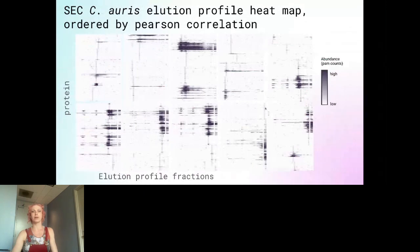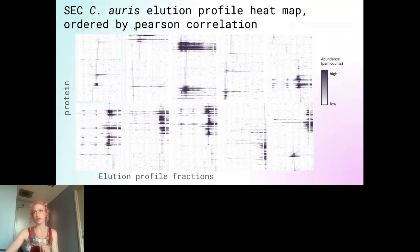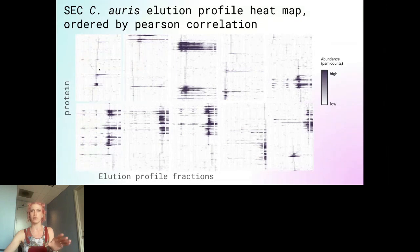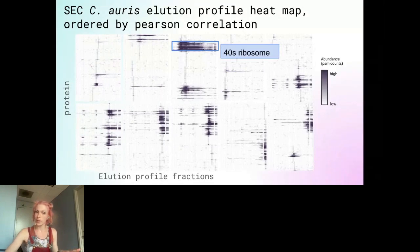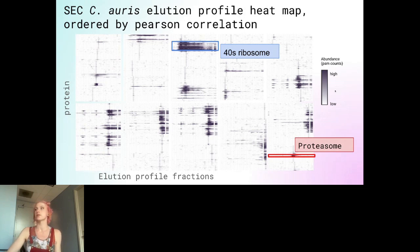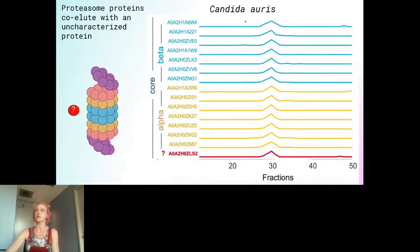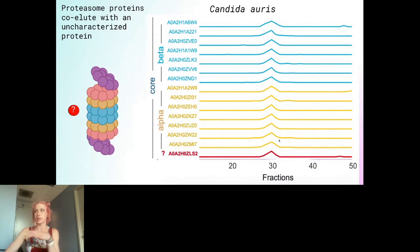At a more granular scale, here is a size exclusion chromatography Candida auris elution profile heat map ordered by Pearson correlation, meaning proteins with similar elution profiles are grouped together. We can see the 40S ribosome subunits grouped together. Looking at the proteasome, the alpha and beta core subunits are all eluting together. Importantly, there is an uncharacterized protein that also elutes with the proteasome, and these are the only proteins eluting in that region of the heat map — providing evidence that this uncharacterized protein is actually co-eluting with the proteasome.